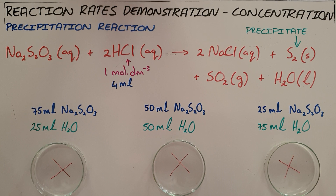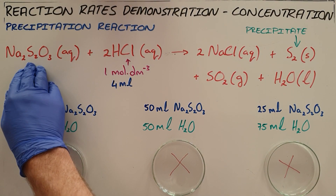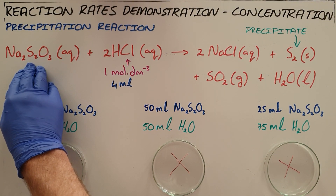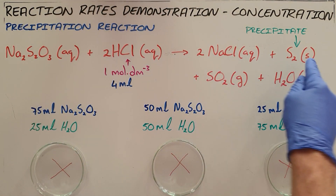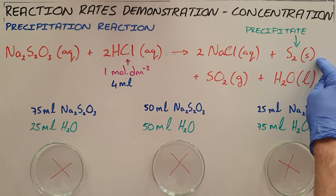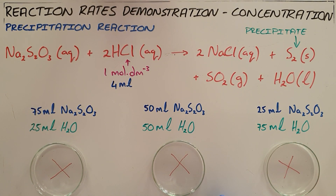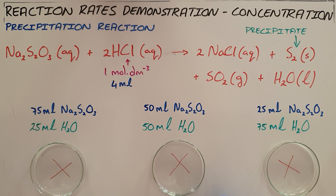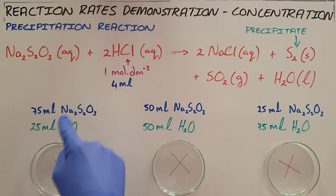So here we have a precipitation reaction occurring between sodium thiosulfate and hydrochloric acid that forms a number of products, but one of them is a solid that forms a white powder — a precipitate that drops to the bottom of the petri dish. As a result, we'll see the X's marked on these petri dishes disappearing.